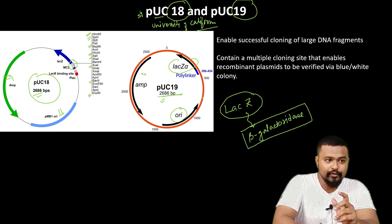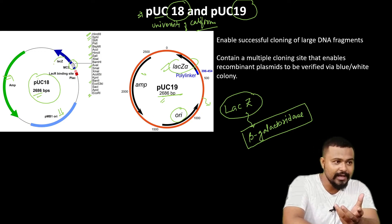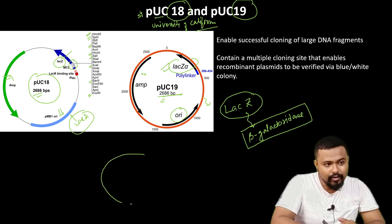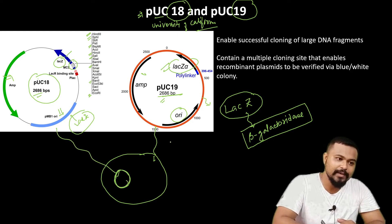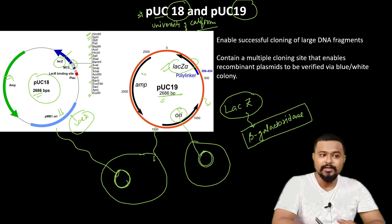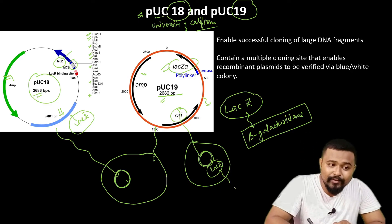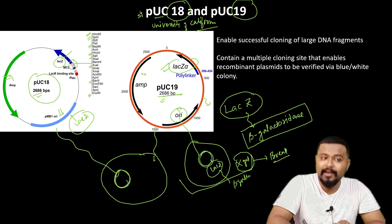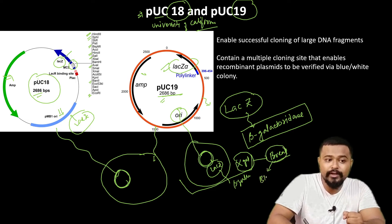The lacZ gene encodes the enzyme beta-galactosidase. When the lacZ gene is intact and functional, the enzyme beta-galactosidase breaks down a chemical called X-gal, producing a blue color. So when X-gal is present and lacZ is functional, the bacteria form blue colonies.